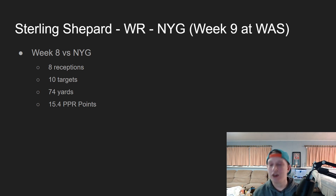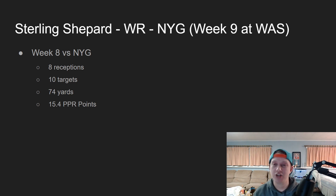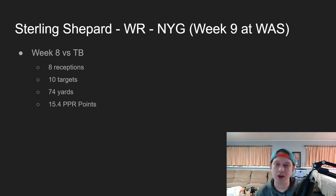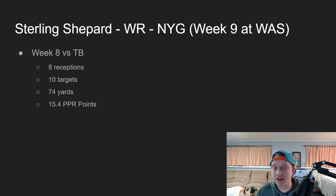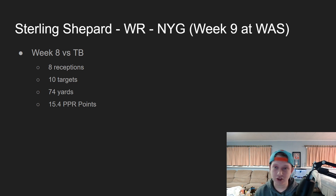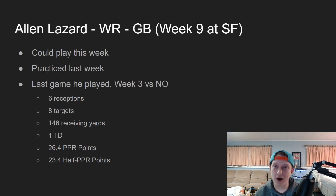Sterling Shepard, wide receiver of the New York Giants, Week 9 against the Washington Football Team. Week 8 against the Tampa Bay Buccaneers, Shepard had 10 targets, 8 receptions, 74 yards: 15.4 PPR points. That performance came against the Bucks' very good defense, so it's impressive. Daniel Jones doesn't look great but Shepard is very involved in this offense. He's likely the number one wide receiver on the Giants and should do well against Washington.